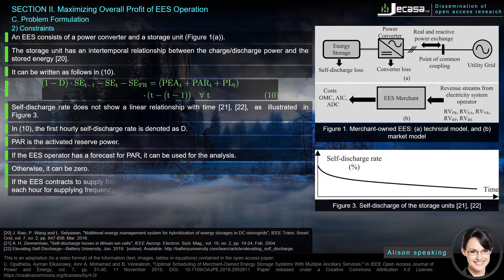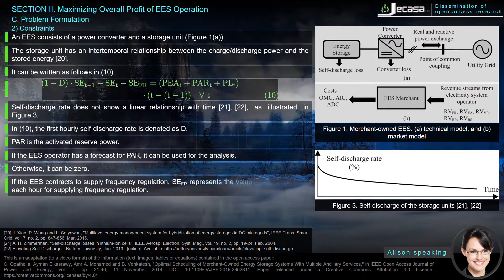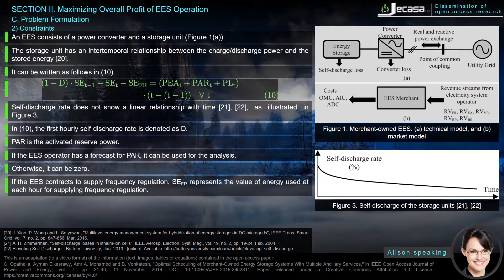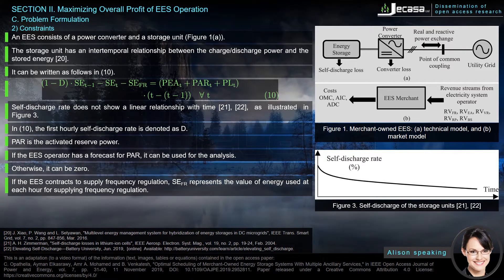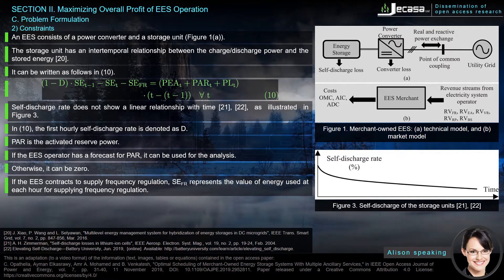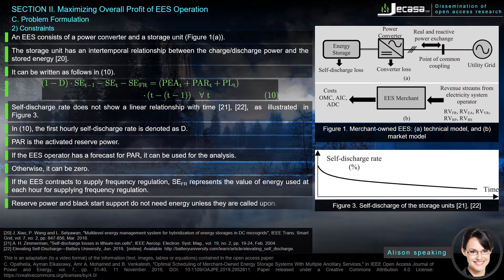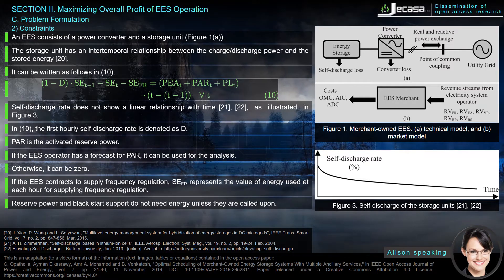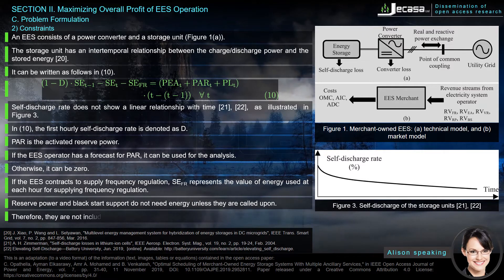If the EES contracts to supply frequency regulation, S_CFR represents the value of energy used at each hour for supplying frequency regulation. Reserve power and black start support do not need energy unless they are called upon; therefore they are not included in equation 10.